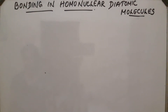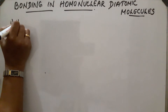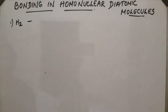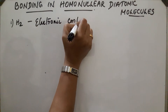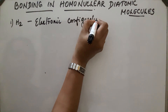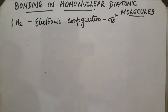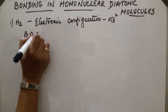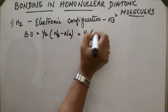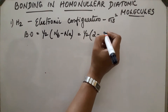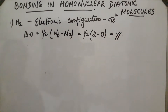Bonding in homonuclear diatomic molecules. The first molecule is the H₂ molecule. It contains two hydrogen atoms, and each hydrogen atom contains one 1s orbital with one electron each. The electronic configuration of molecular orbitals will be sigma 1s², meaning both electrons are filled in the sigma 1s molecular orbital. The bond order equals 1/2 into (Nb minus Na), which is 1/2 into (2 minus 0), equal to 1. Bond order 1 means it contains one single covalent bond.